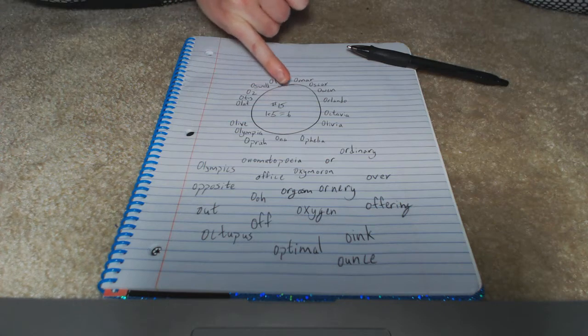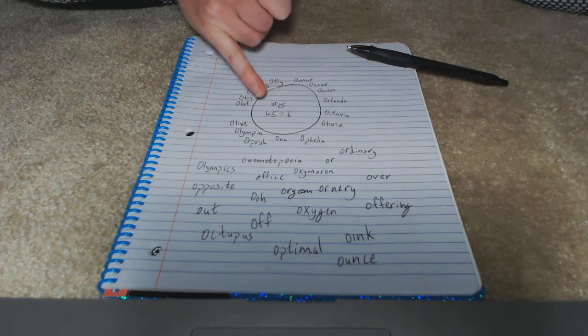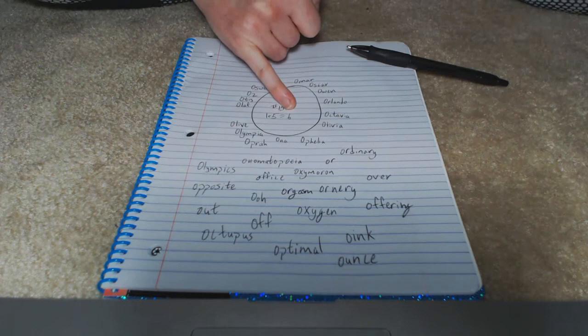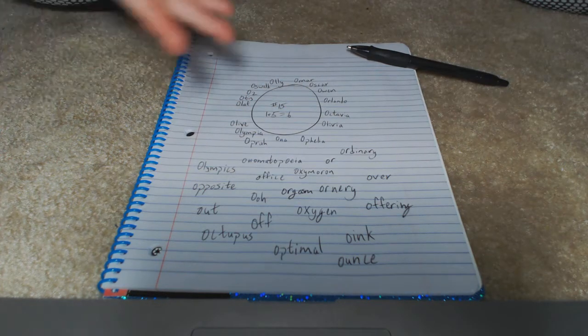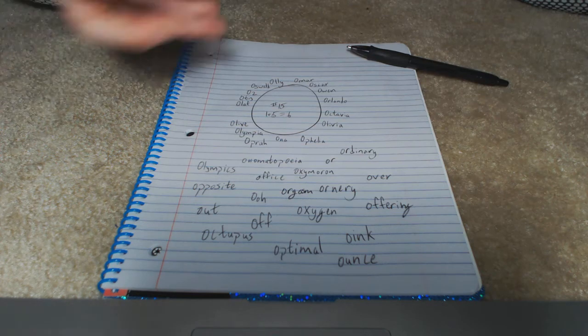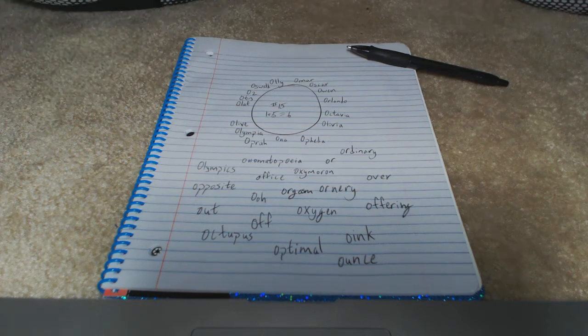Now O is the 15th letter of the alphabet and when we add 1 and 5 we get 6. So it's influenced by the number 6 which has a lot to do with nurturing and with turning things into something else.